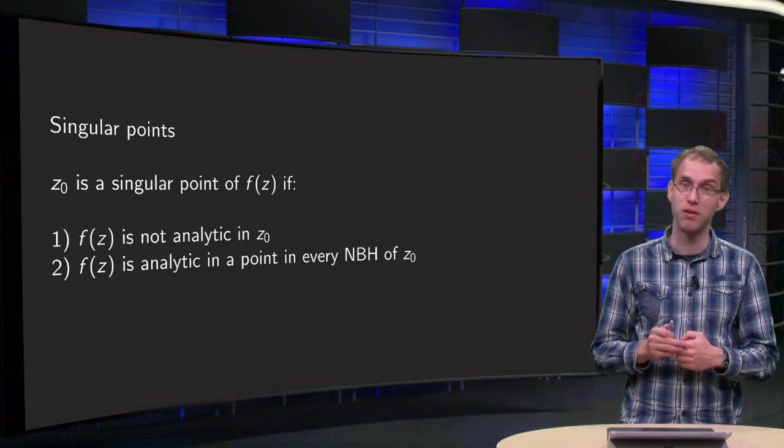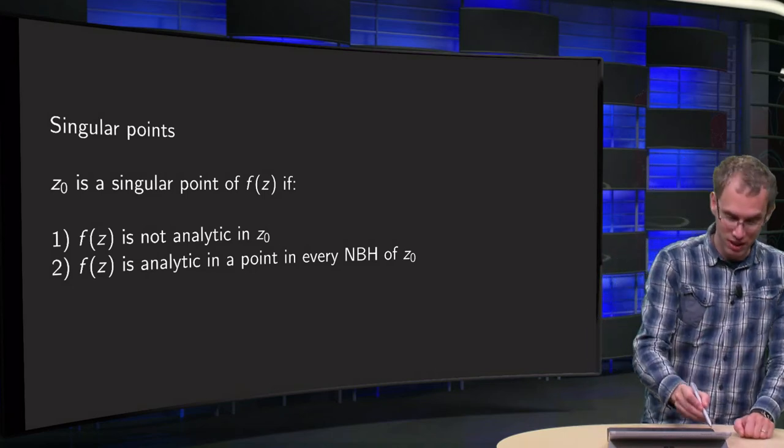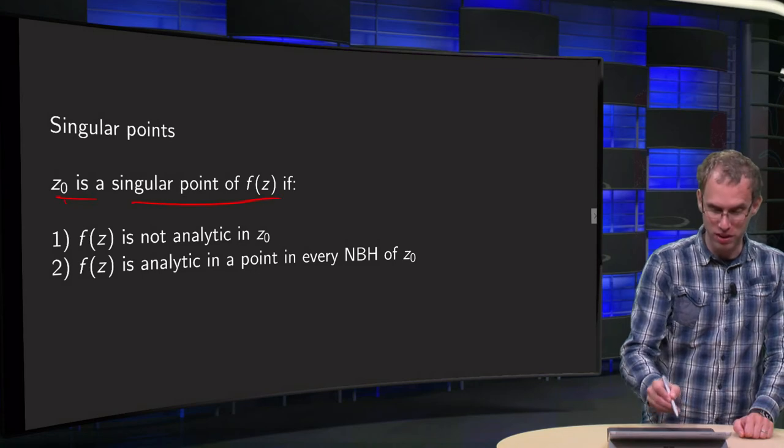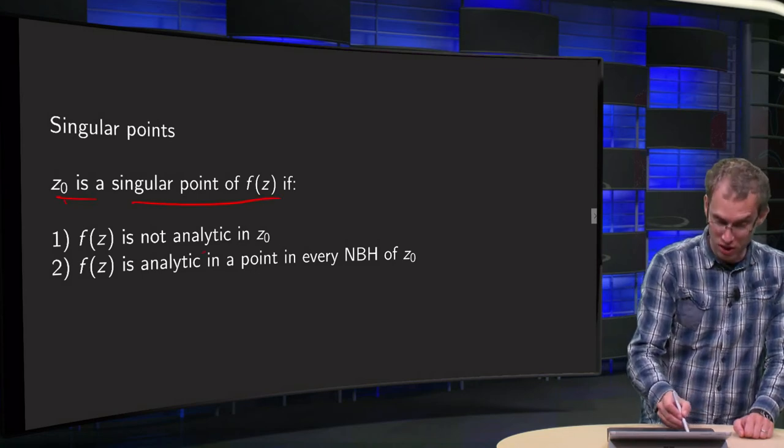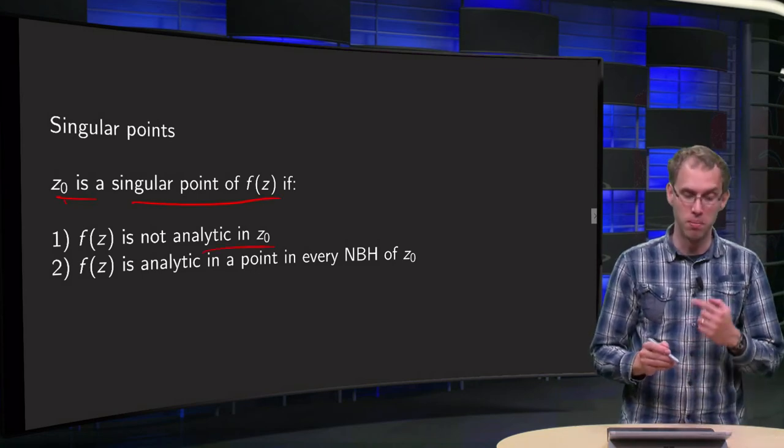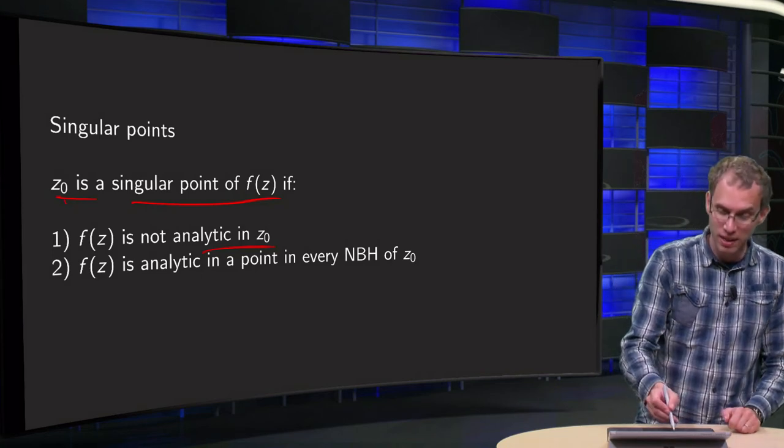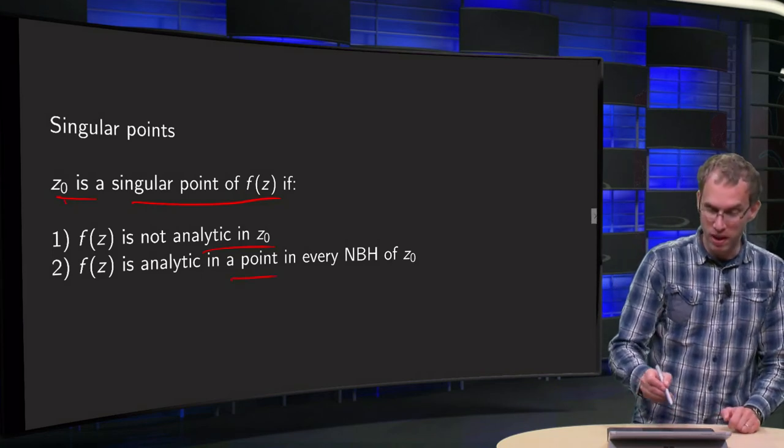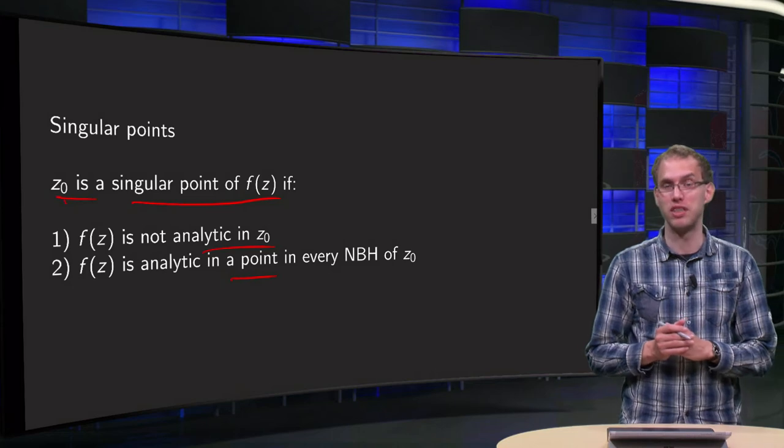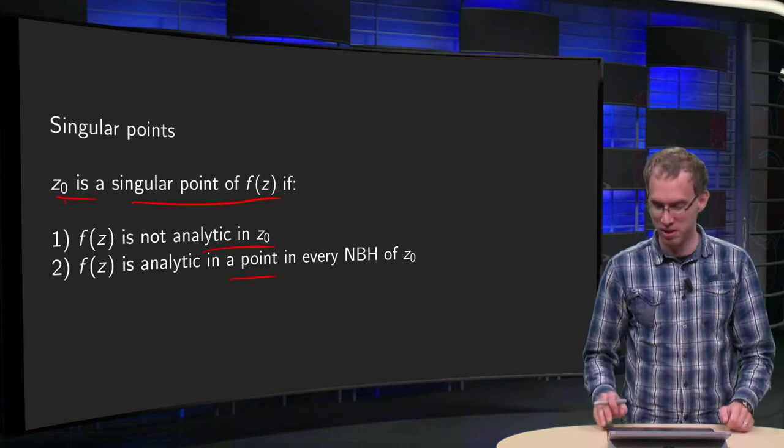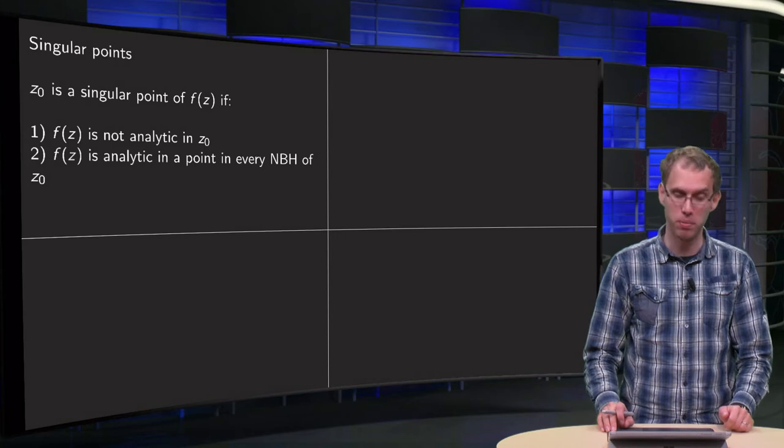As you will see in this video, z0 is a singular point of f of z if: 1) f of z is not analytic in z0, and 2) f of z is analytic in a point in every neighborhood of z0. The second part is a bit cryptic, but let's look at a few examples.